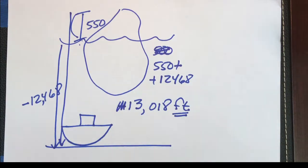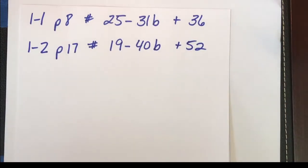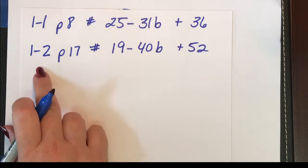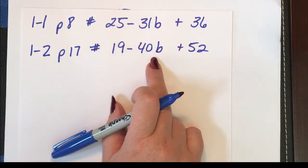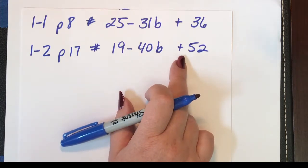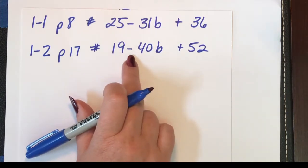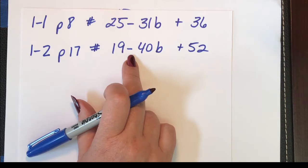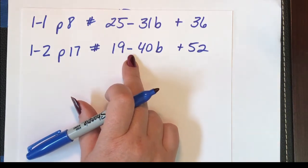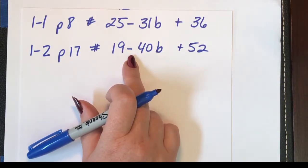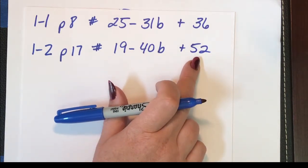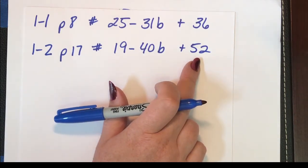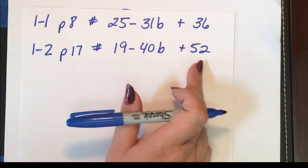And that takes us to our homework assignment. And for section two, that starts on page 17, we're going to do numbers 19 through 40B plus number 52. Most of these are basic addition subtraction problems, and hopefully they'll go rather quickly. And then this is your multi-step deep thinking problem. All right. See you in the next video.